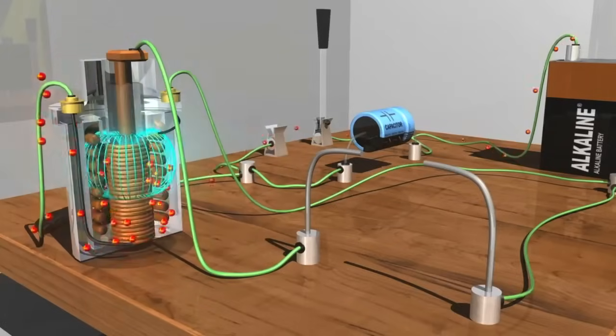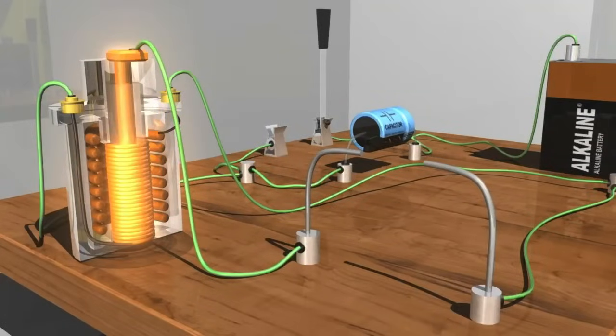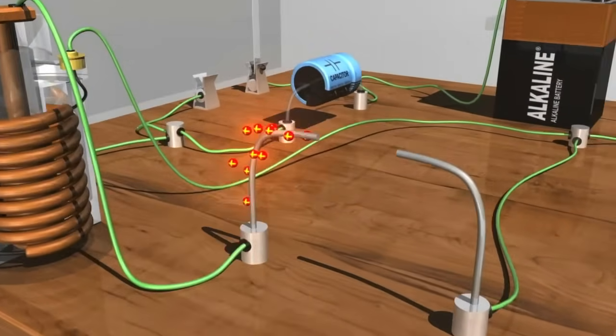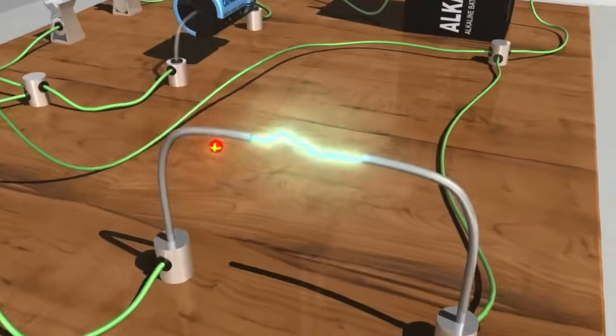If we open the knife switch to stop the current, the magnetic field suddenly collapses. Due to the principle of electromagnetic induction, this rapid change induces a surge of current in the secondary coil, which streams out and jumps the spark gap in the circuit.